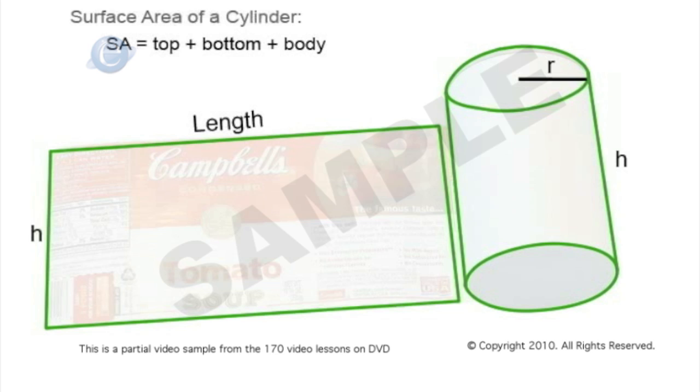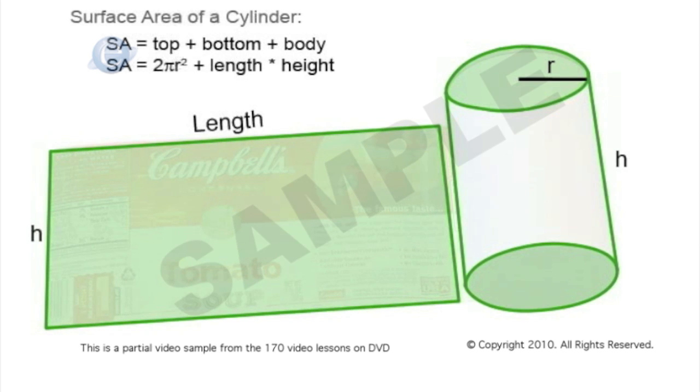So the area of the top would be the area of a circle, pi r squared, and we're going to double that to account for the top and bottom. And then the area of the rectangular body, the area of a rectangle is simply length times height. So we have 2 pi r squared plus length times height.